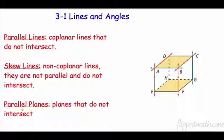And those are non-coplanar lines, they're not parallel and they do not intersect. So since they are not in the same plane and they don't intersect at all, then they're skew. Now take a look at this, AD and AE. Again, they're not in the same plane. They share a point though, don't they? One point is in common, so they're not skew. And then the last one is parallel planes, and parallel planes are planes that do not intersect.